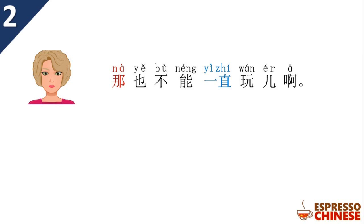那也不能一直玩啊。 If you put 那 at the beginning of a sentence, it acts as a conjunction meaning 'in that case' or 'even so.' Because the son said he had already reviewed everything long ago, the mother says: even in that case, 也不能一直玩啊 — you also cannot play all the time. A traditional Chinese mom always wants you to keep learning, learning, learning — no play, just learning.